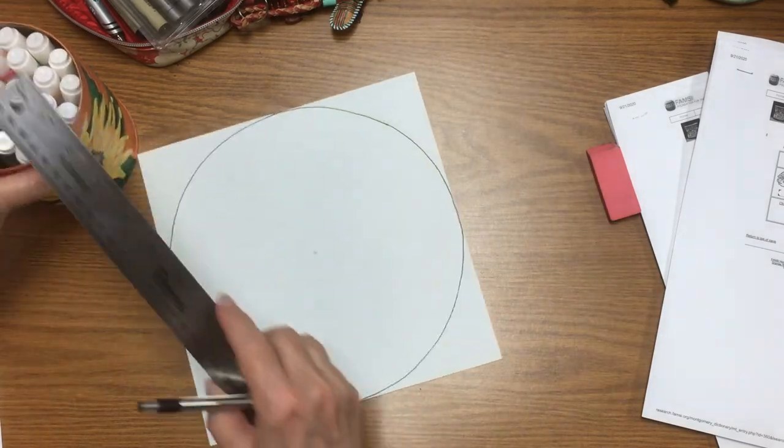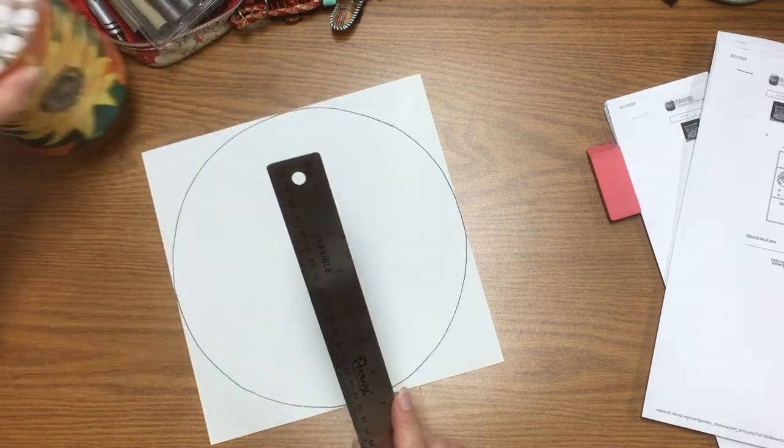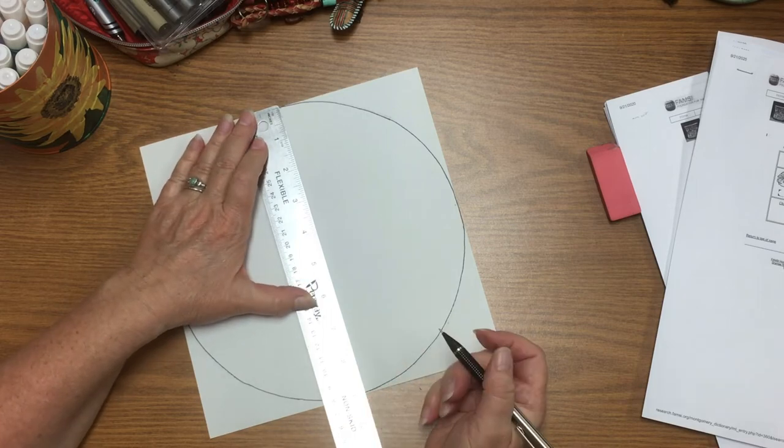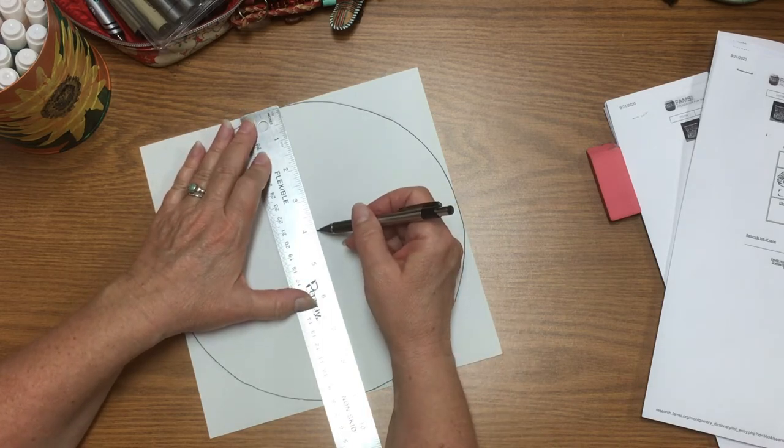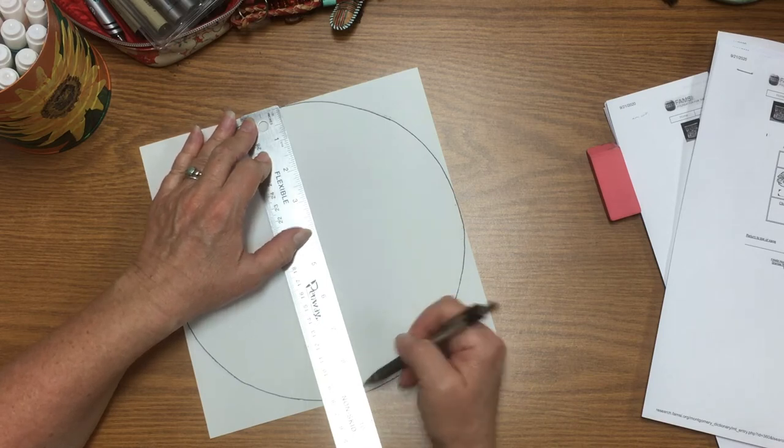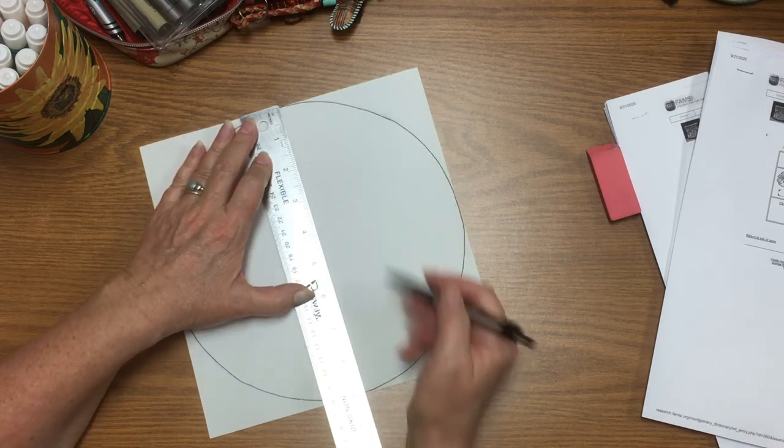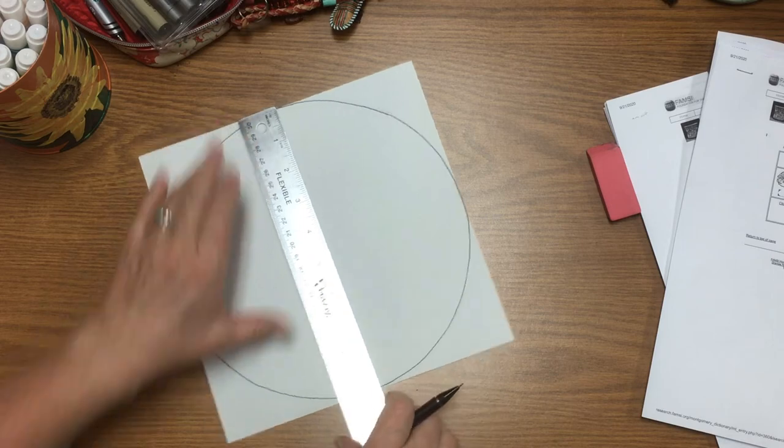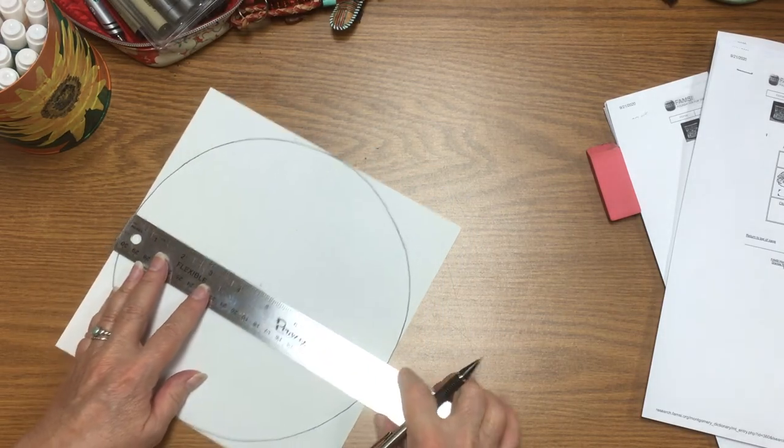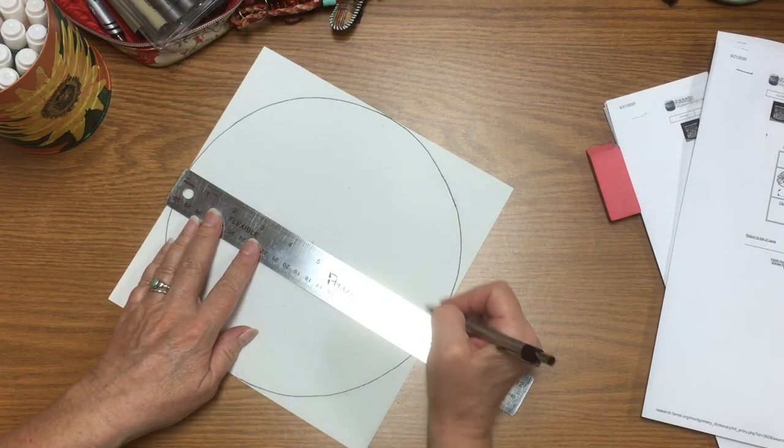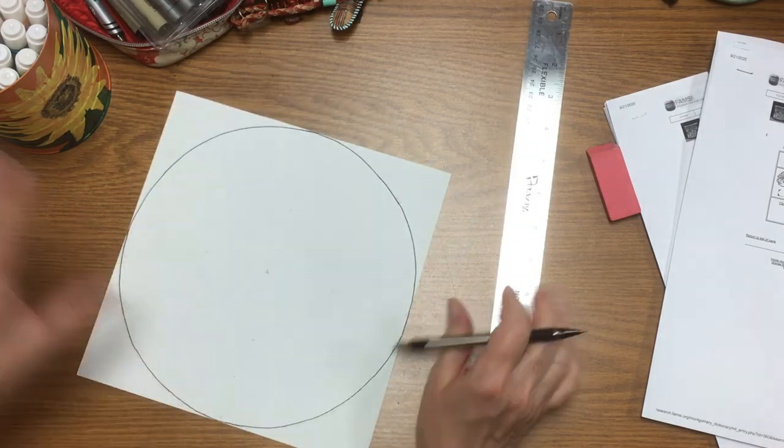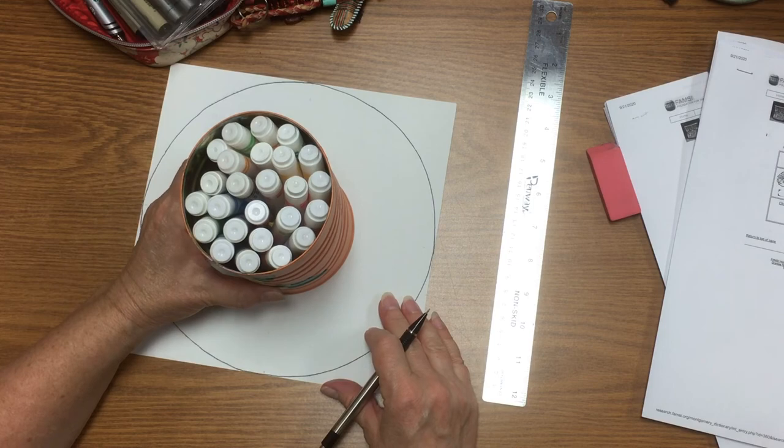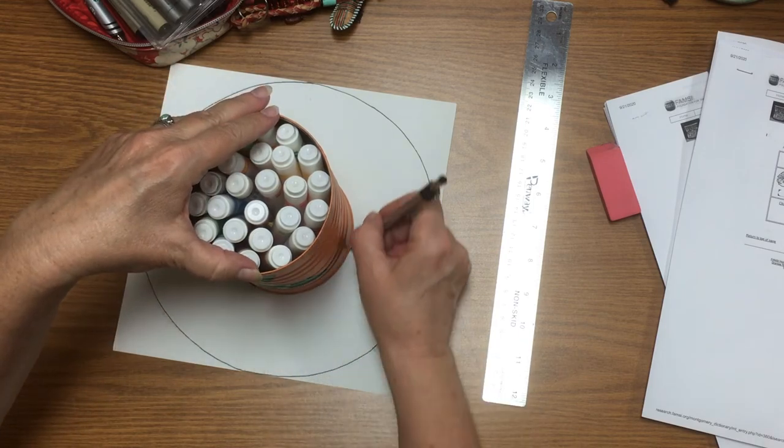So if I measure my can, it's about four inches. And there's my nine-inch circle. If my can is four inches, that's going to leave me with five extra inches. So I want approximately two and a half inches on either side there. So I can just mark two and a half inches there and two and a half inches here. And do the same thing over here. Mark two and a half inches there and two and a half inches there. And now I have guide marks where I can set my can right there and trace around it.